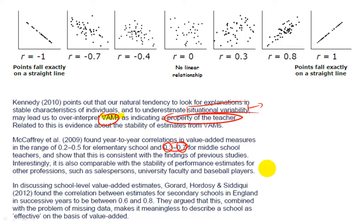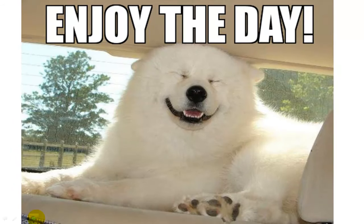The truth is, value-added measures are the very best measures we've got. The take-home is that we don't really know what causes good learning to happen until after the event. It does appear that student voice is pretty useful — students can tell you when they're learning well. Things that really do strongly correlate with student outcomes include teachers' subject knowledge, which can be tested, especially in more maths and science-based subjects. I hope you've found that interesting — have a good day.